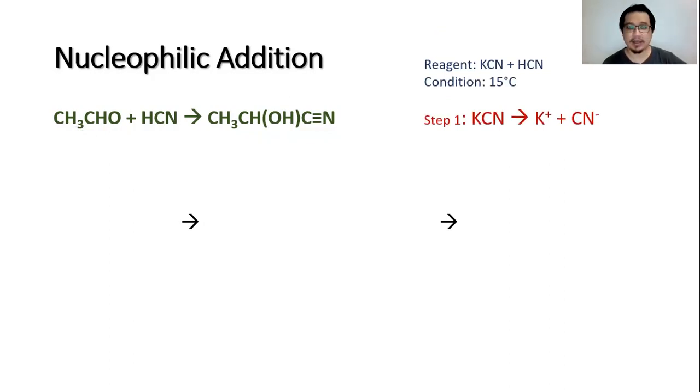The condition for this reaction is 10 to 20 degrees Celsius, but I'm writing 15 degrees Celsius. For step one, the first step requires you to produce the nucleophile, which is the cyanide ion.